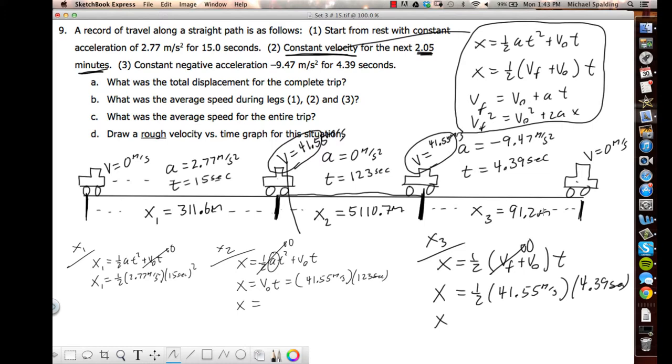All right, so that was a lot of work for part A, but I think most of the work is done. The rest of this is going to be pretty quick now. So what's the total displacement for the whole trip? We add them all up. Take this plus this plus this, so 5,110.7, so I'm getting 5,513.